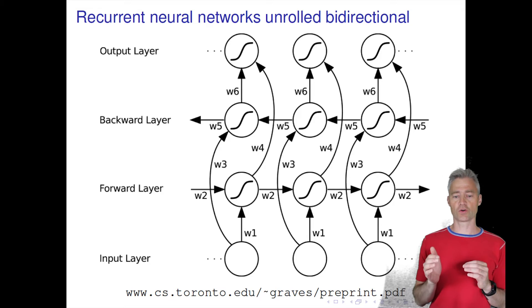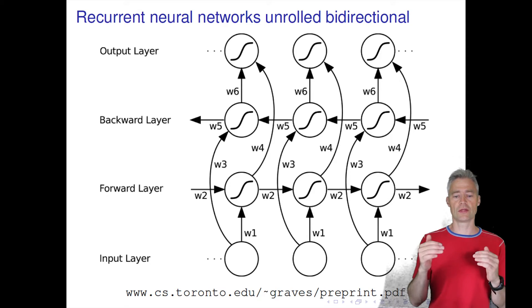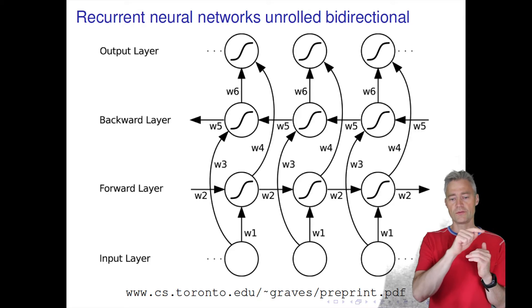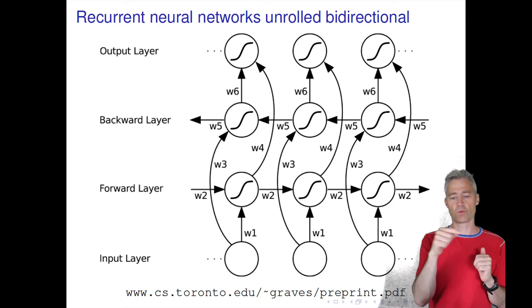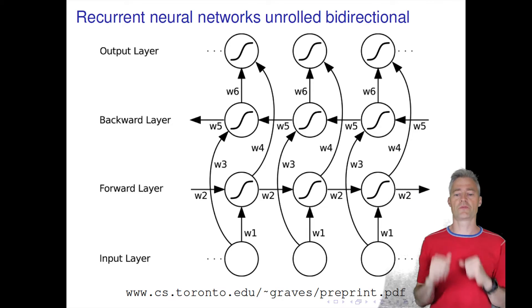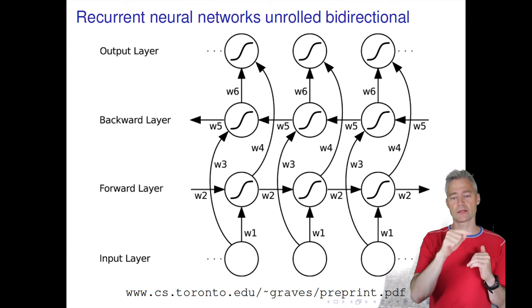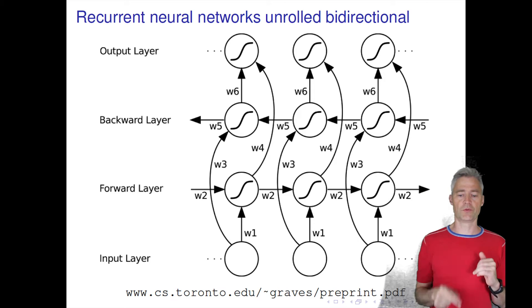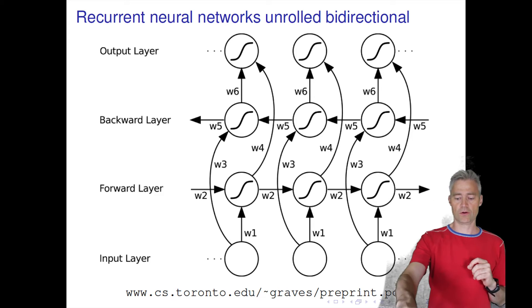We can also — and this is done a lot — have several of these recurrent networks with information streams both forward and backward in time, stacked on top of each other, so that the second recurrent layer gets inputs from the recurrent layer below.